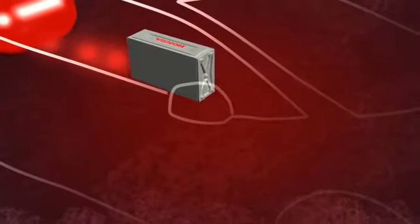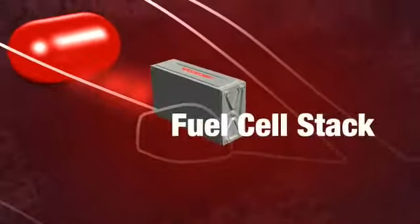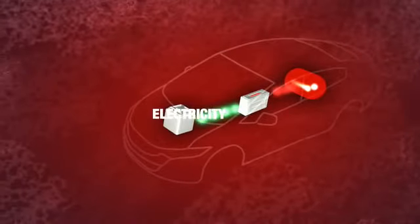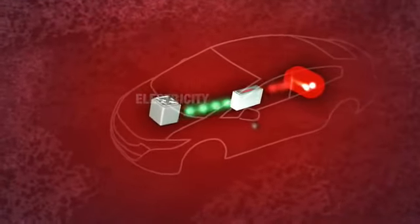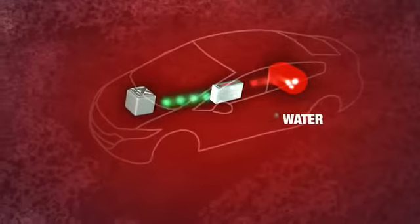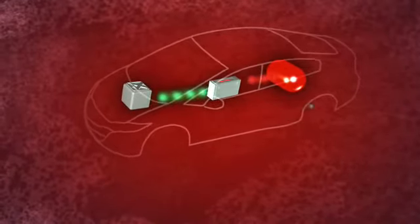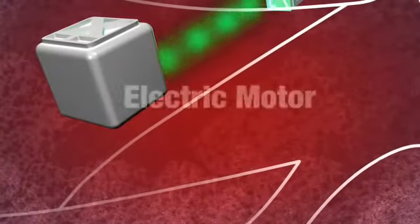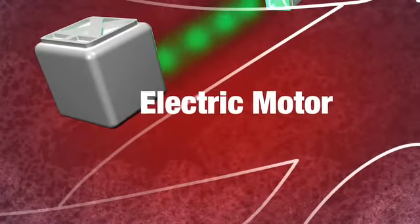The fuel cell stack is like a tiny electric power station. Inside it, the hydrogen combines with oxygen from the air to generate electricity and water as a by-product. Water vapor is the fuel cell car's only emission. The electricity created inside the fuel cell stack is used to power the electric motor, which in turn drives the car.